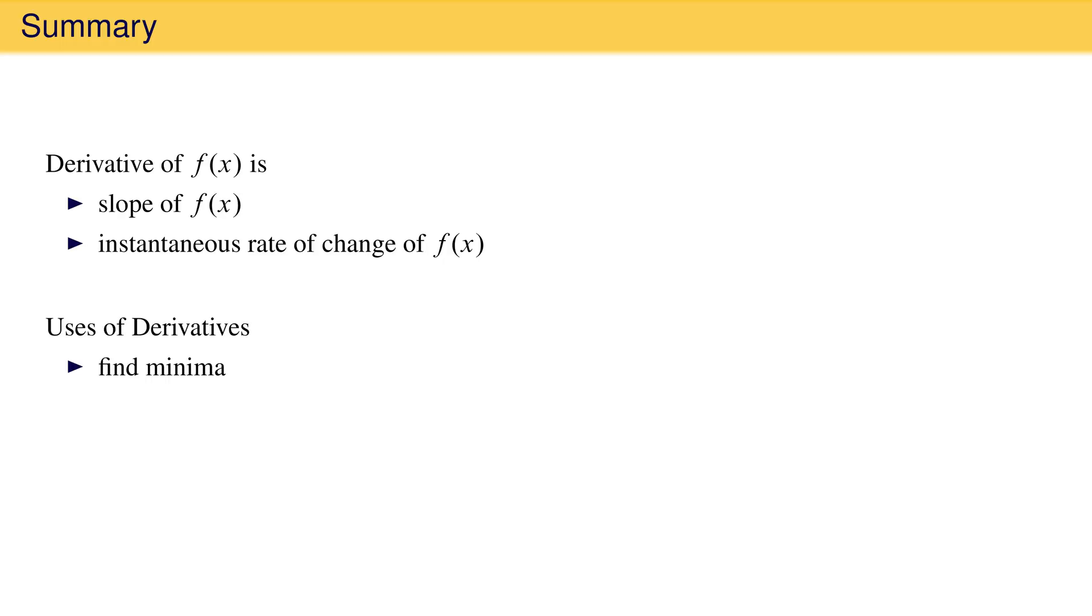What we have seen is that the derivative of a function f of x is the slope of the function at a particular point and also the instantaneous rate of change of the function at that point. Beyond finding the slope of a function, derivatives can be used to find the points at which a function reaches a minimum, a maximum, or an inflection point.